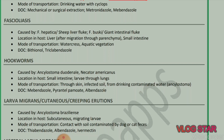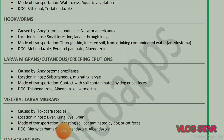Next parasite: Fascioliasis, caused by Fasciola hepatica (sheep liver fluke) and Fasciolopsis buski (giant intestinal fluke). Location in host: liver after migration through parenchyma, and small intestine. Mode of transmission: watercress and aquatic vegetation. Drug of choice: bithionol and triclabendazole.